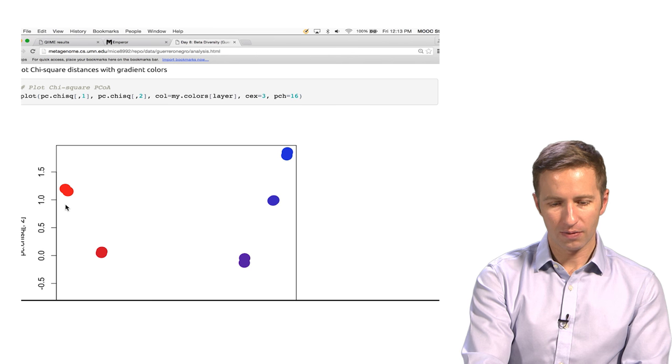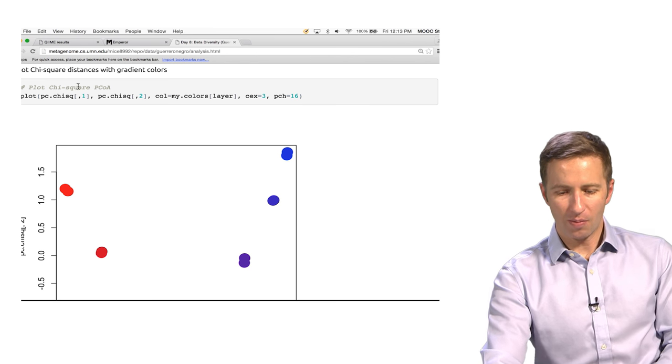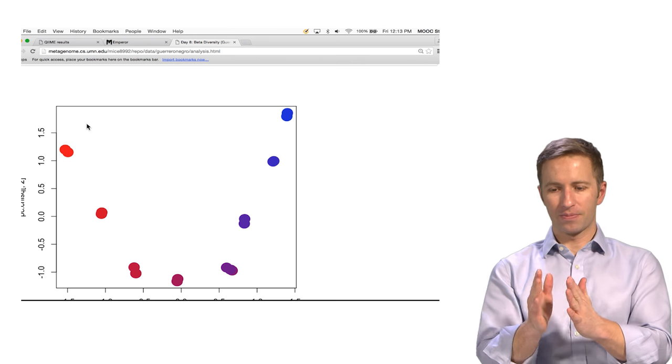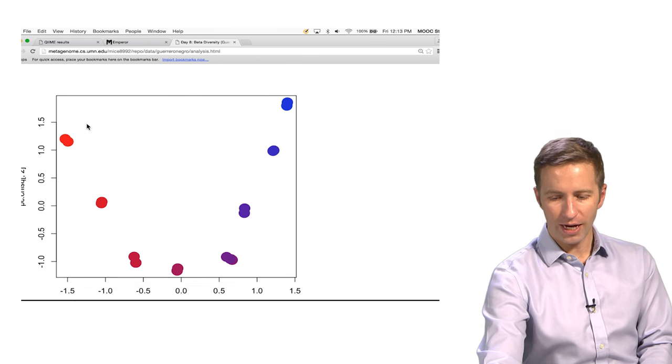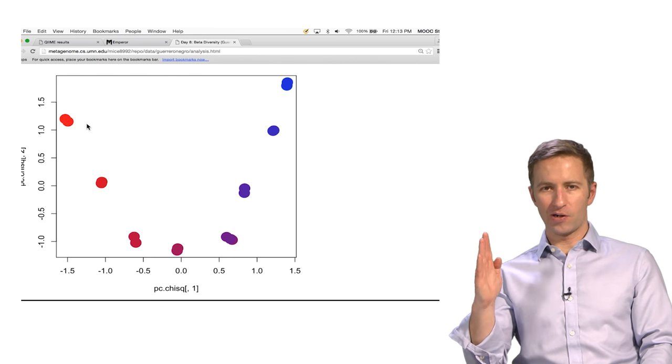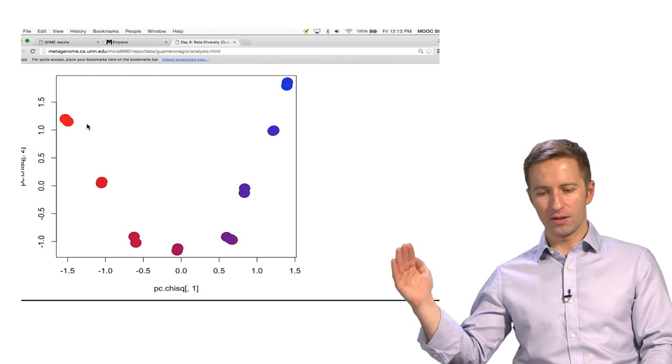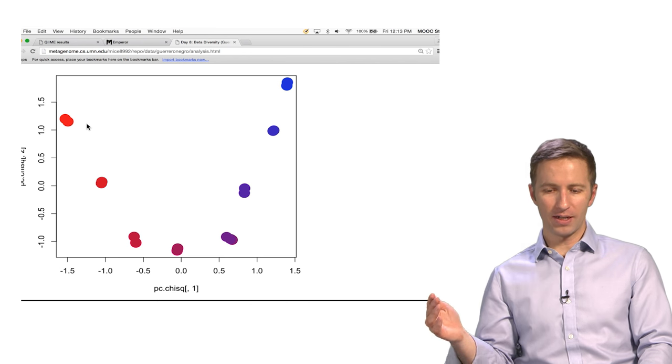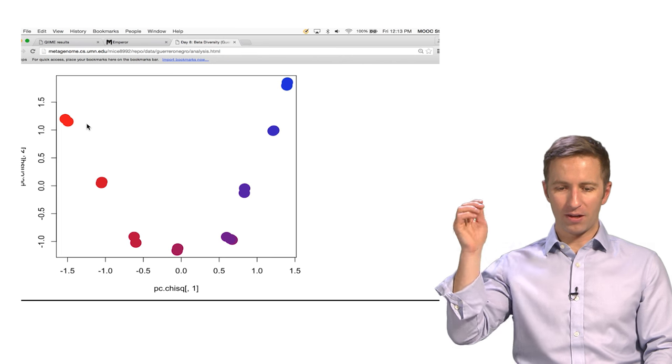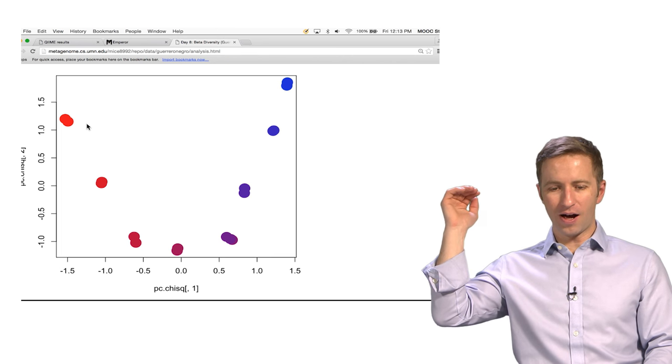So actually that's right here. So same type of plot. And this one looks a little bit better in the sense that the first axis, PC1, is perfectly correlated with the layers. So this is really an amazing plot because it's showing that